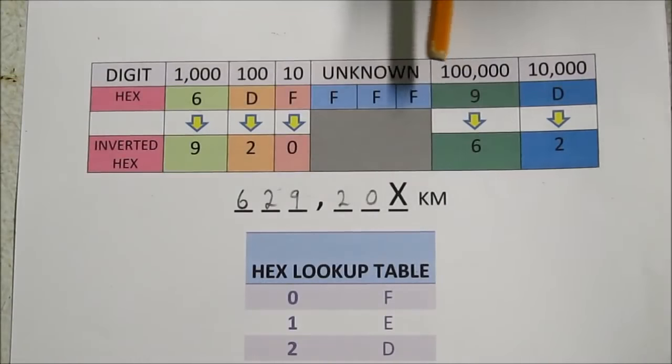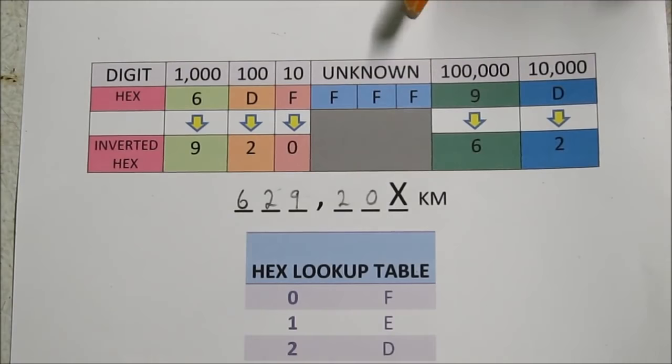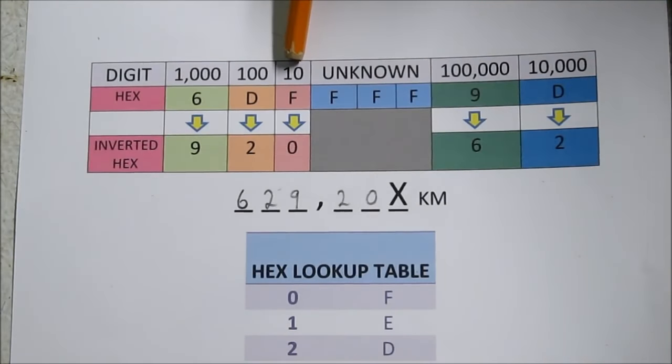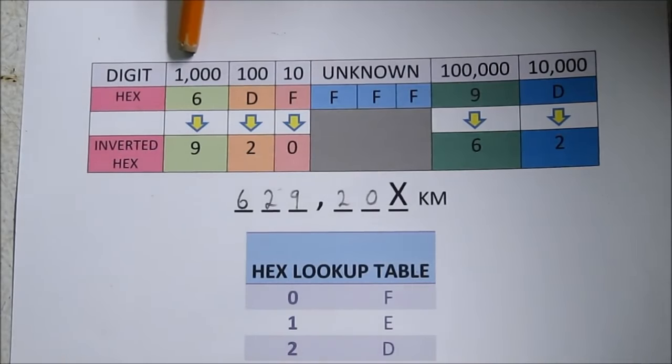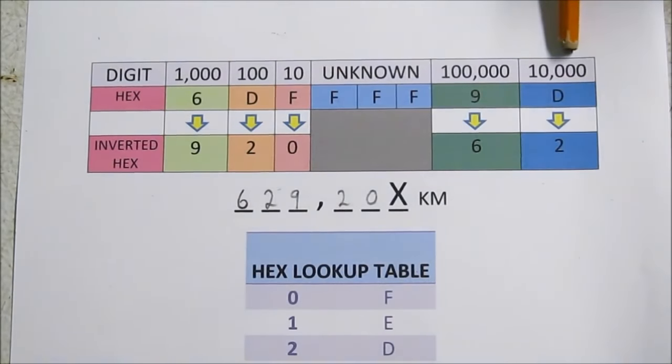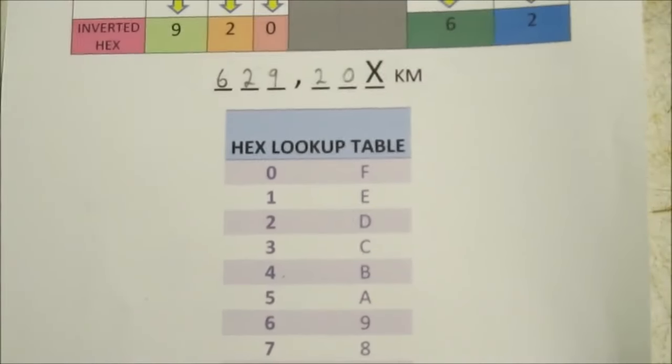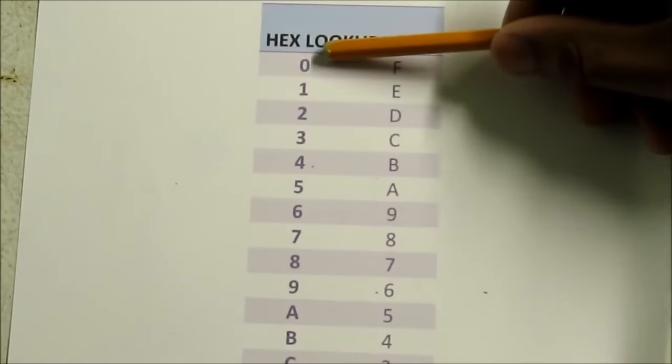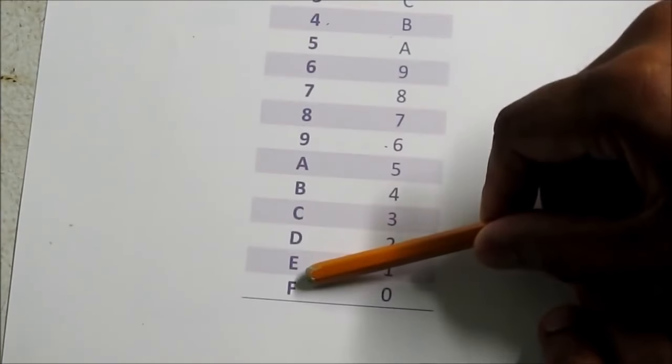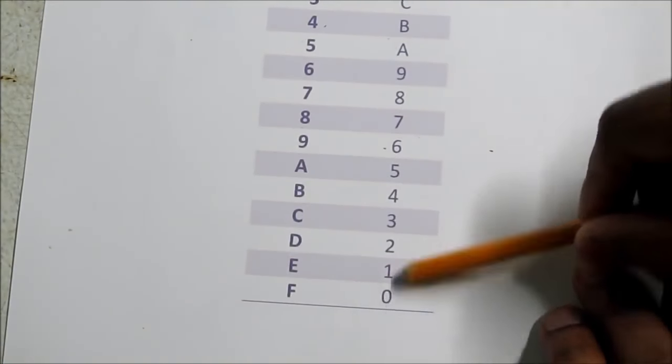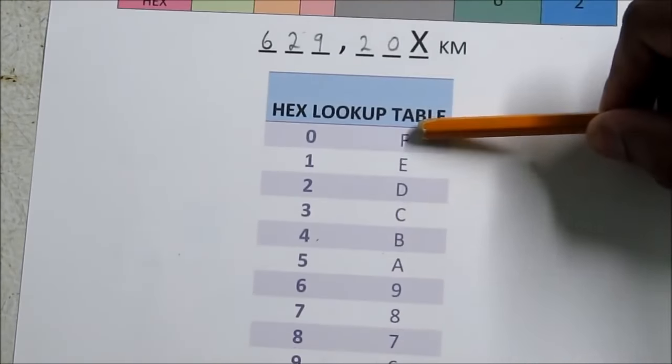Here's how to decode the 8 digit hex characters that you get from the chip. Basically the middle 3 are unknown. This column here is your tens column, then your hundreds column, your thousands column, your ten thousands column, and your hundred thousands column. These are coded here in inverted hex. So what you need is a hex lookup table which is essentially 0 to 9 and then A to F inverted backwards from 0 to 9 and then A to F.